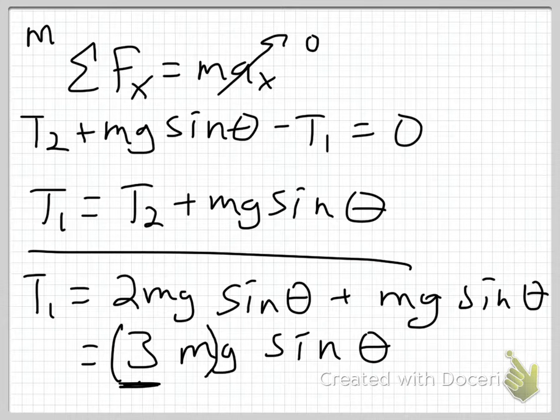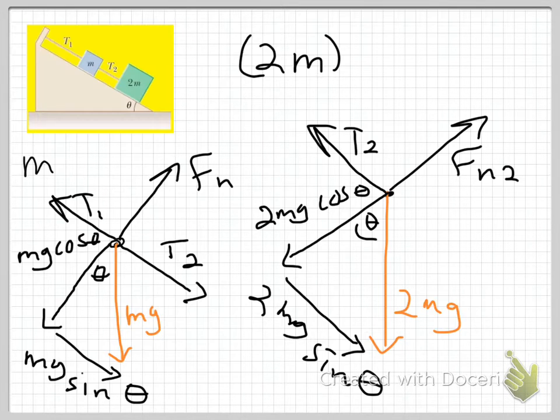Which is not surprising. If I go back and look at my picture, if you are this string right here, if you're T1, what you feel is that you're supporting 3m worth of mass, right? We're ignoring the mass of the string that has T2 in it. But what I feel if I'm that string is that I've got 3m of mass that I'm having to support up. So, it's not surprising that you find that T1 is equal to the same thing it would be if I had one singular mass of 3m.